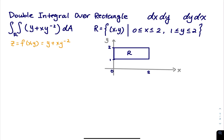We have a double integral of y plus xy to the negative 2 dA over the rectangle R on the xy plane where x is between 0 and 2, and y is between 1 and 2.